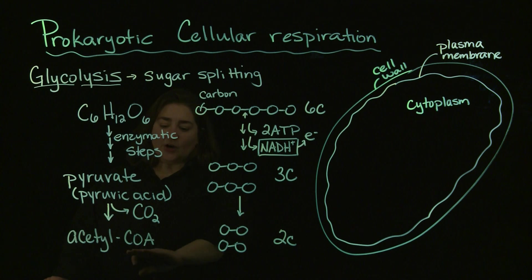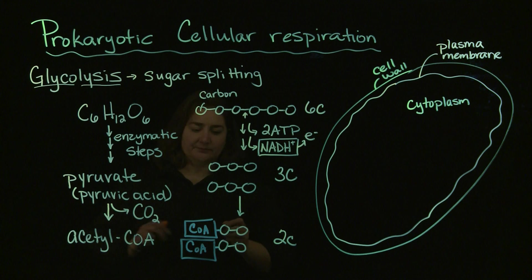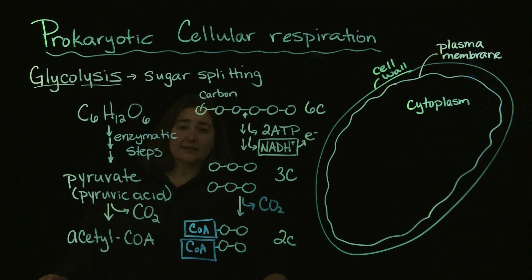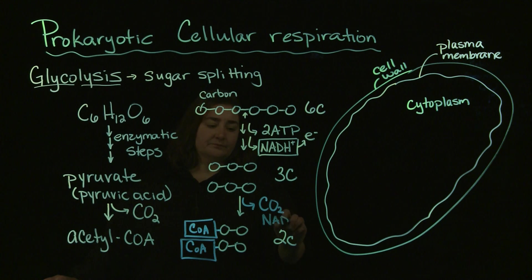The CoA stands for coenzyme A because attached to those two carbons, you're going to have a coenzyme that's tagged onto it. That's how the name comes about - the CoA comes from the coenzyme that's attached. The two carbons are going to be the acetyl group associated with this. In terms of that process, we're going to generate some carbon dioxide and we're also going to have some NADH that's made here as well.